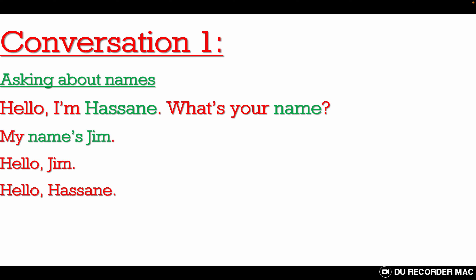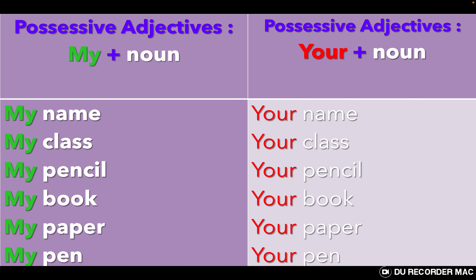Now we have possessive adjectives. We saw before that 'my' plus a noun gives us: my name, my class, my pencil, my book, my paper, my pen, my laptop, my table, my TV. And we have 'your' plus noun: your name, your class, your pencil, your book, your paper, your pen.